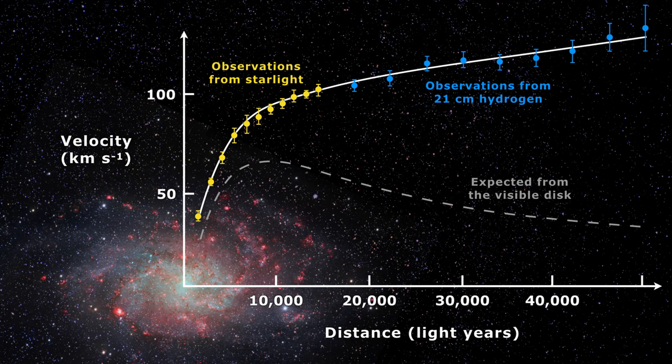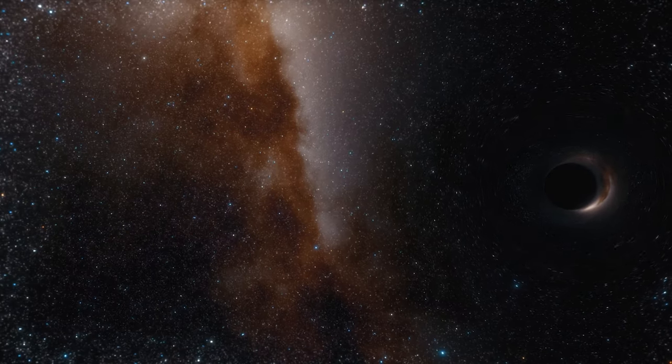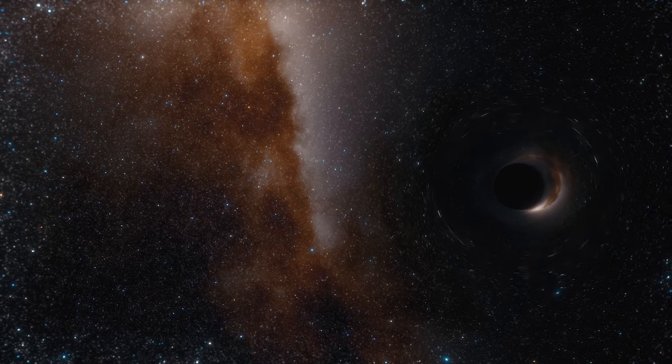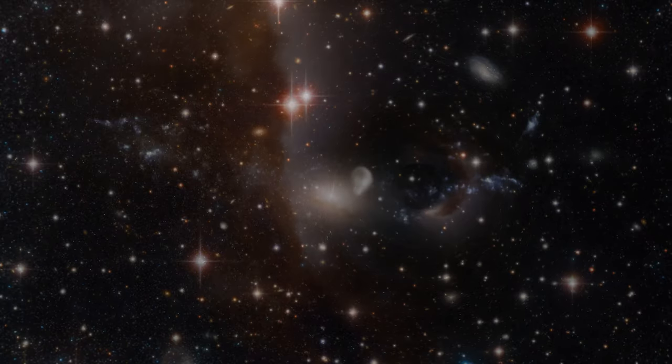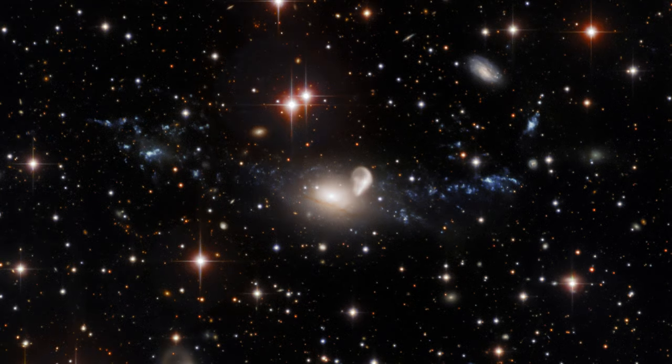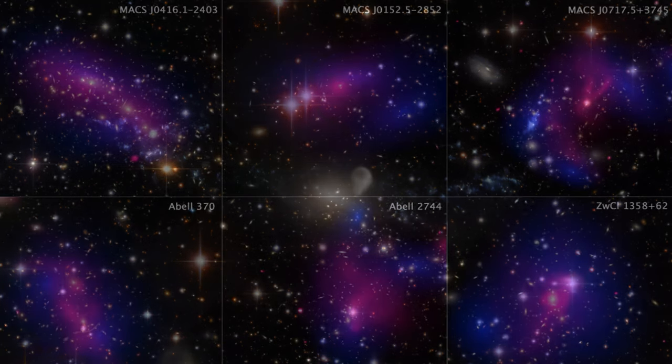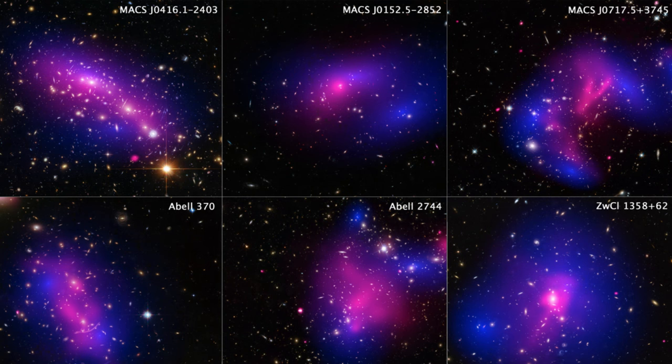This discrepancy suggests the existence of dark matter. The phenomenon of gravitational lensing further reinforces the existence of dark matter. When galaxy clusters collide, the gravitational pull of dark matter distorts and magnifies the light from more distant objects, revealing its invisible presence.